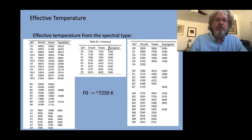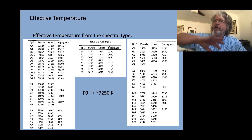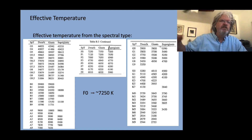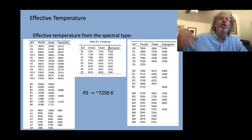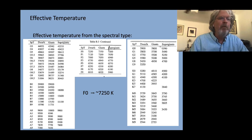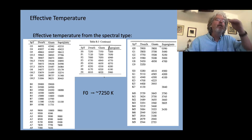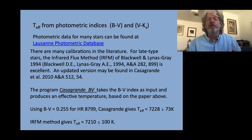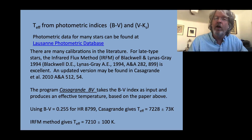We talked about what effective temperature means — if this star were a black body of the size of the star at the distance that the star is, and I add up all of the flux at all of the wavelengths, I would get the equivalent amount of energy arriving at the Earth per square centimeter per second as I would from a black body with a temperature of 7250 Kelvin. That's the effective temperature. There are other ways to get effective temperatures. You know from having taken photometry that you can get temperatures from color indices.